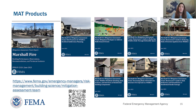The Marshall Fire MAT produced a detailed report outlining observations, conclusions, and recommendations that you may want to review. The MAT also produced multiple documents in addition to the report, including mitigation recommendations for multi-hazard events, defensible space, structure ignition, detailing and joints, subdivision planning, and structure-to-structure fire spread. All of these documents can be found on FEMA's website and include links to other helpful resources and references.